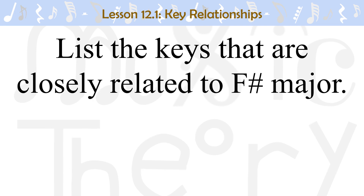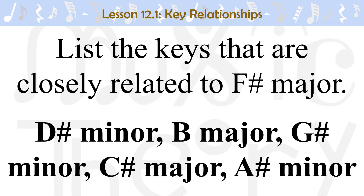List the keys that are closely related to F sharp major. D sharp minor, B major, G sharp minor, C sharp major, and A sharp minor. The relative minor to F sharp major is D sharp minor. F sharp major has six sharps, and the keys that have five or seven sharps are B major, G sharp minor, C sharp major, and A sharp minor.